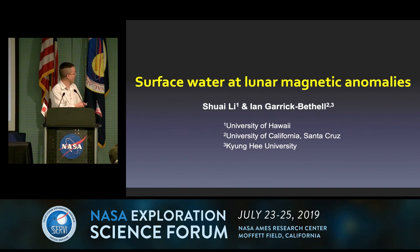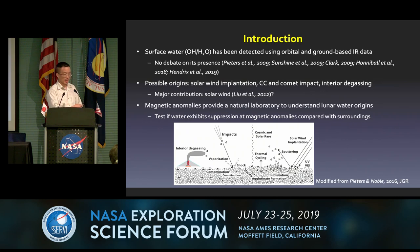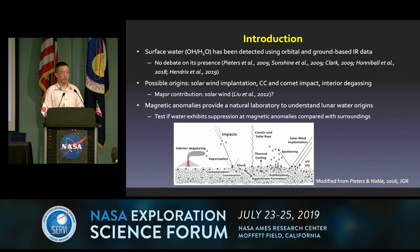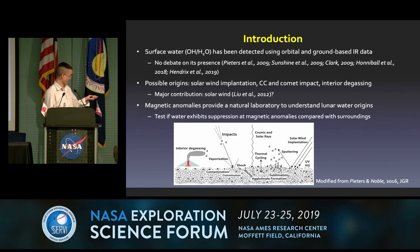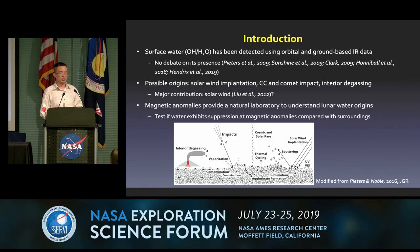All magnetic anomalies have swirls, but most of them have swirls. The surface water has been detected by both orbital and Earth-based IR data, so there is no debate about the presence of water on the lunar surface. However, three possible origins for water on the surface have been proposed: solar wind implantation, water-rich impacts, and interior degassing.